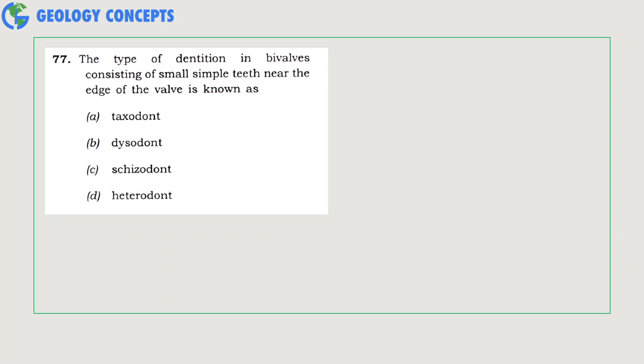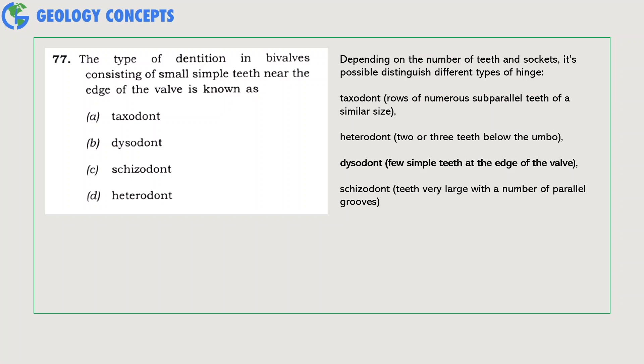The type of dentition in bivalves consisting of small simple teeth near the edge of the valve is known as taxodont, dysodont, desmodont, or heterodont? In taxodont, rows of numerous sub-parallel teeth of smaller size is generally seen. In heterodont, two or three cardinal teeth are present below the umbo. In desmodont, teeth are very large with a number of parallel grooves. But in dysodont, it represents a few simple teeth at the edge of the valve. So option B is the right answer here.